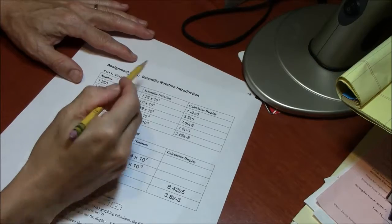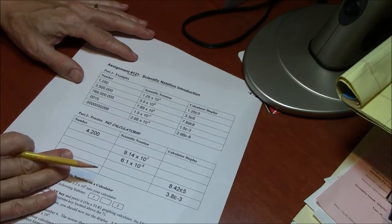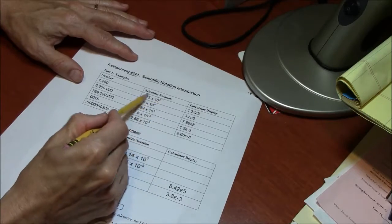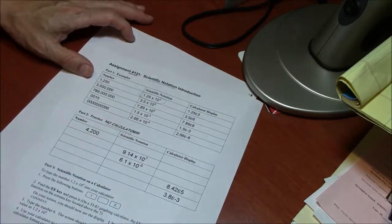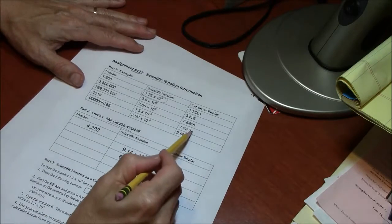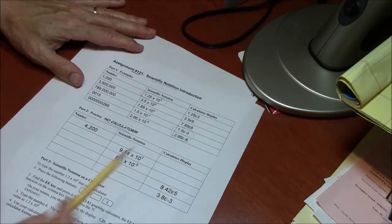I'm giving you help with assignment 121, Scientific Notation. There are two skills here. One is being able to deal with scientific notation using your brain, no calculator. And the other is to be able to understand and use a calculator to do scientific notation.